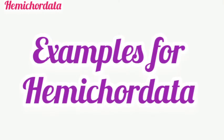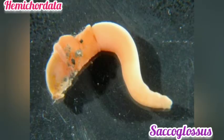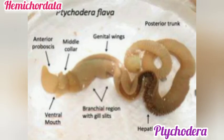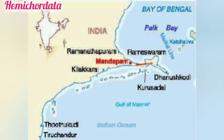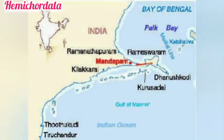Examples of Hemichordata include Balanoglossus, Saccoglossus, and Ptychodera flava — the Indian hemichordate — which is found in Krusadai Island in Tamil Nadu.